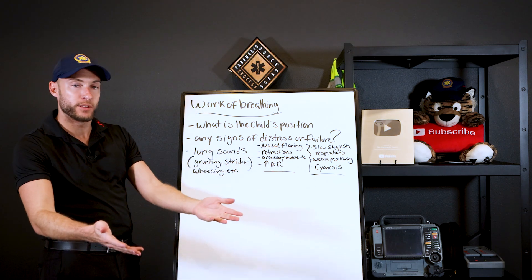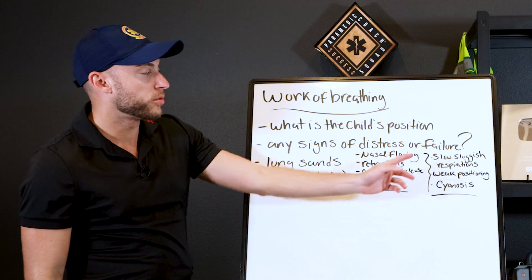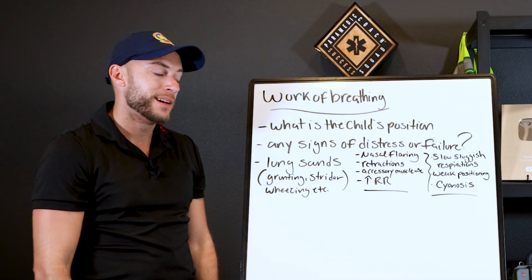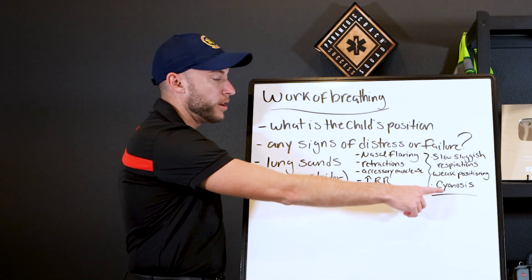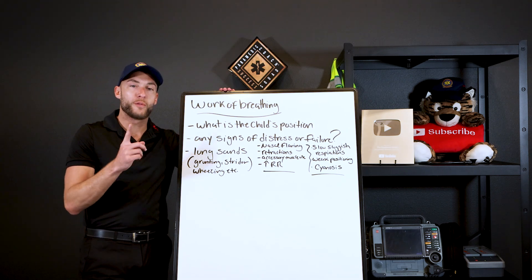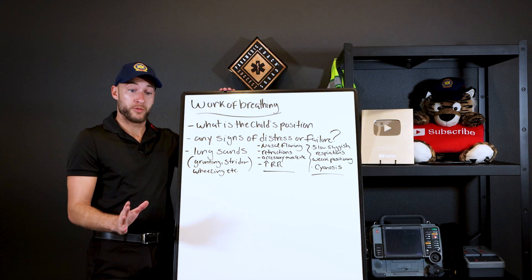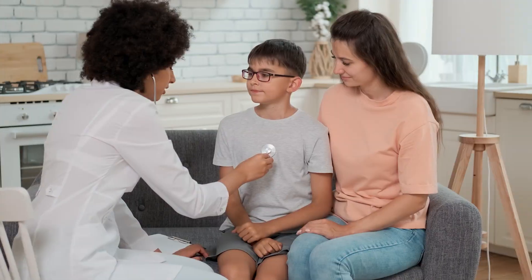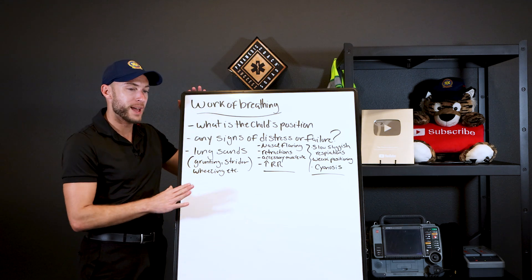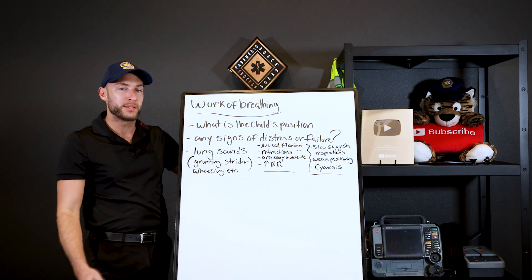We can see these signs by looking at and exposing the patient. Respiratory failure is much worse — the respiratory rate starts to slow, with slow sluggish respirations and weak body positioning. Again, that feeling of not caring that you're there. Cyanosis — a bluish coloring of the lips, nails, and skin — is also a sign. For lung sounds: if I hear grunting or stridor, or even wheezing, I might be able to hear that from across the room. Stridor and grunting can sometimes be heard at distance. When first walking up, note any audible sounds, then do a quick listen to the lungs for any odd sounds.